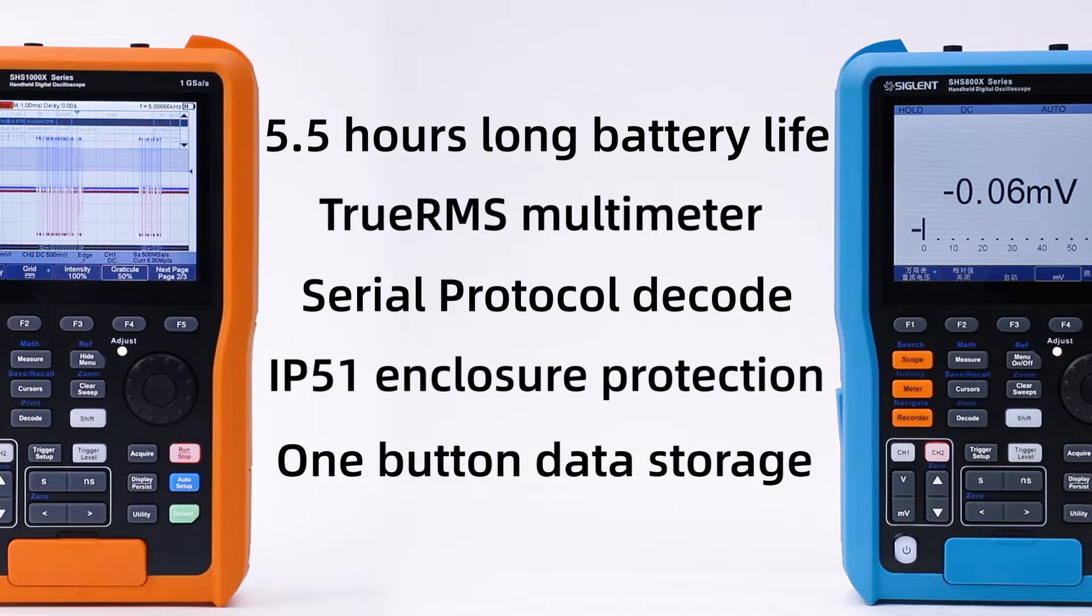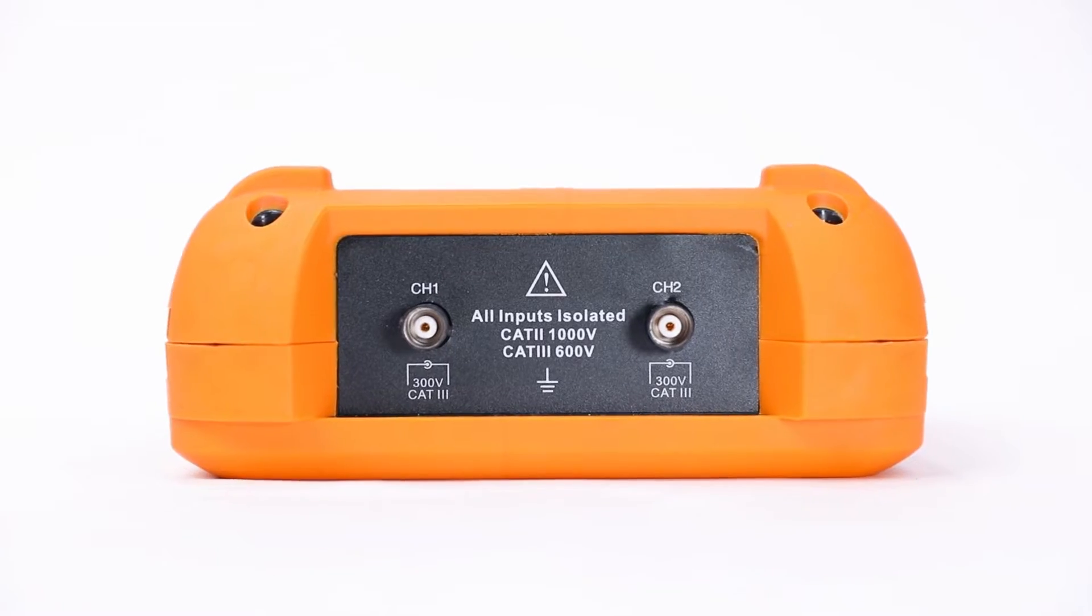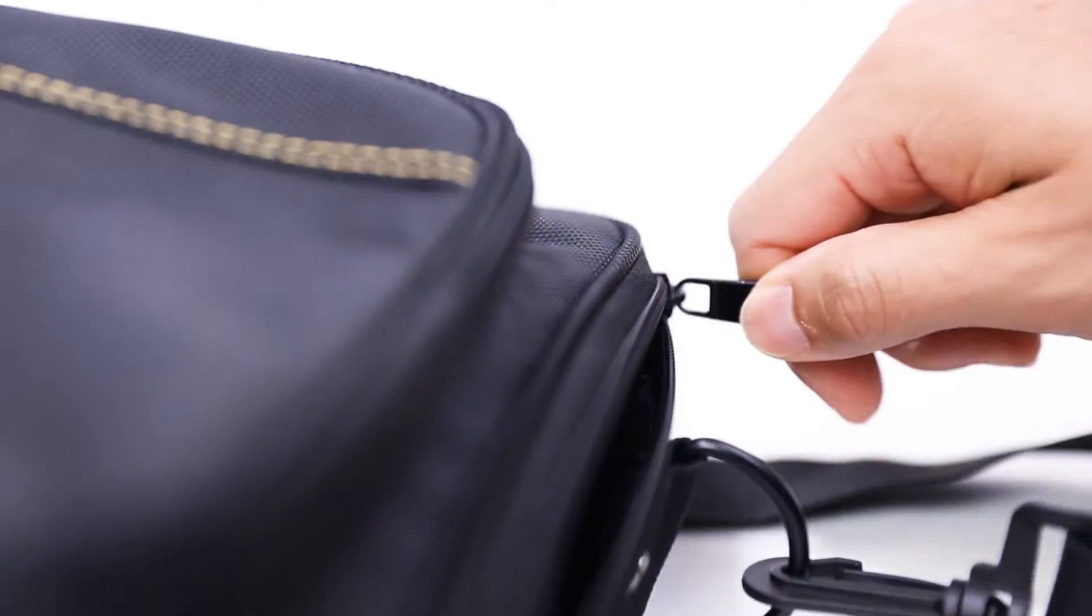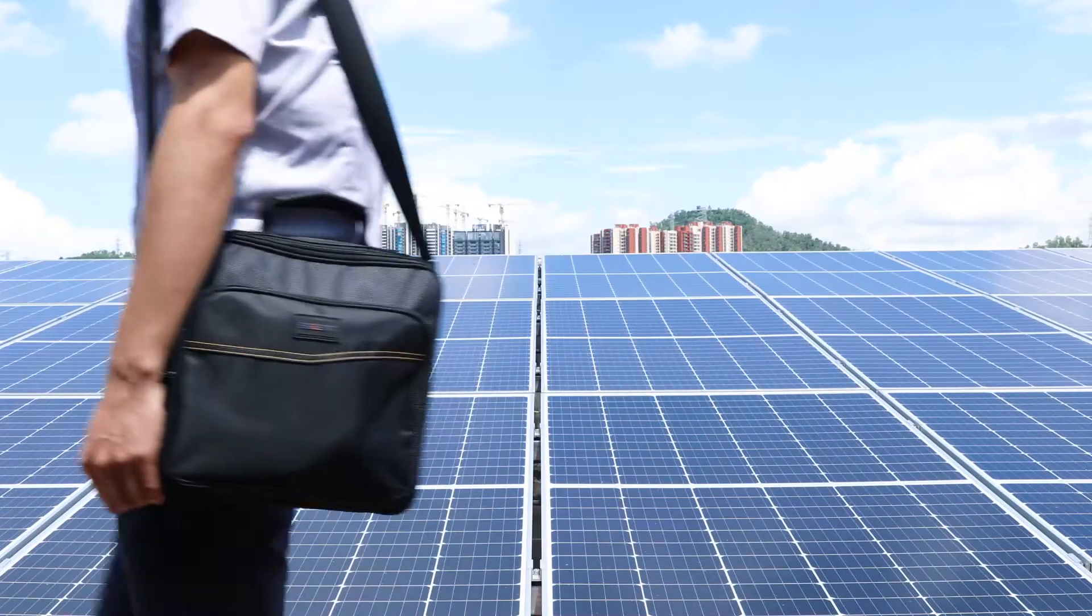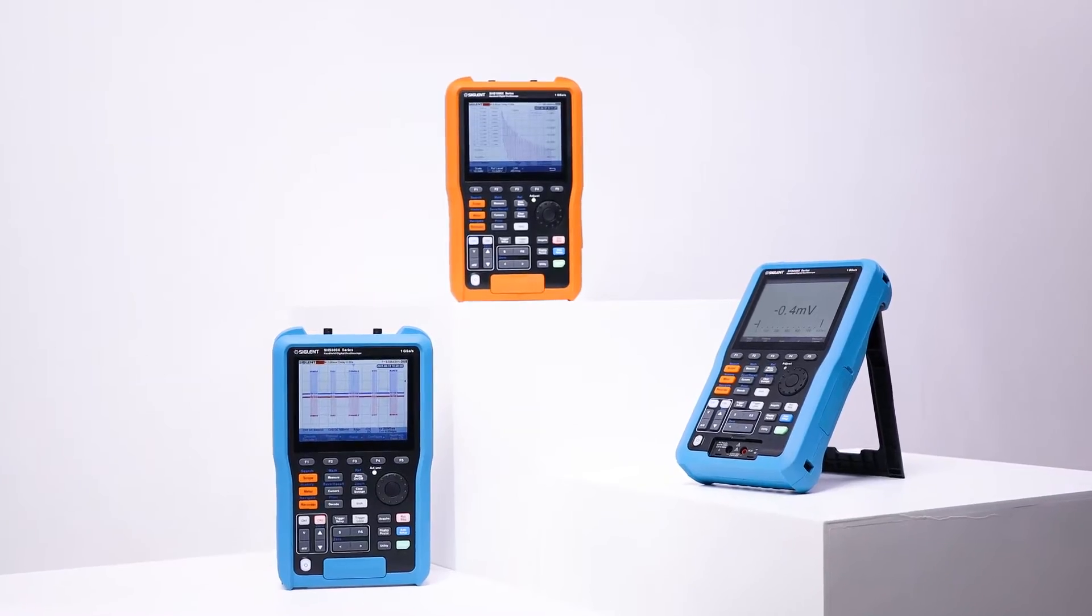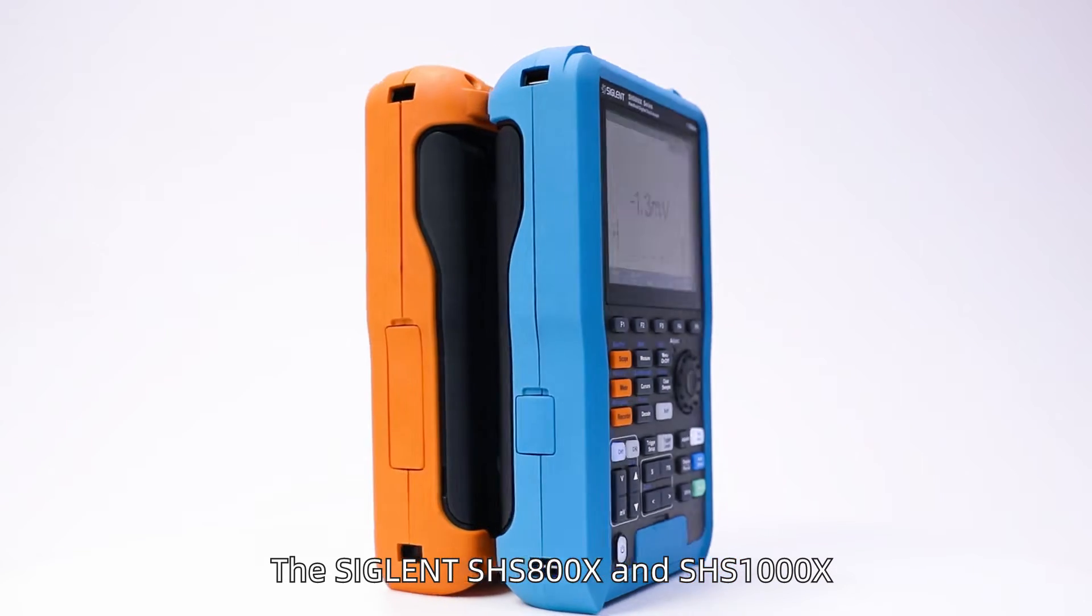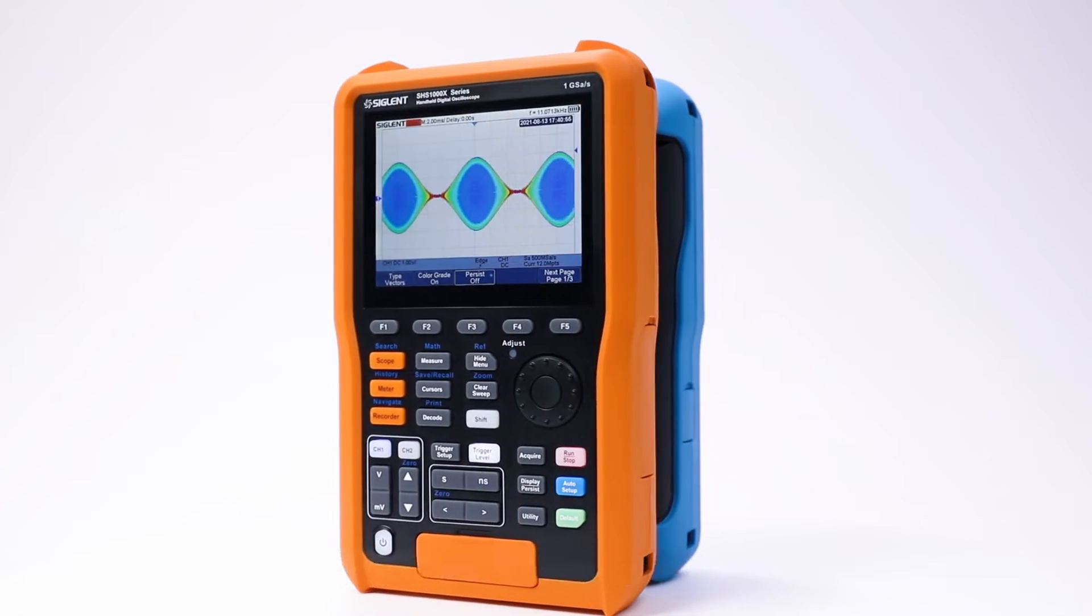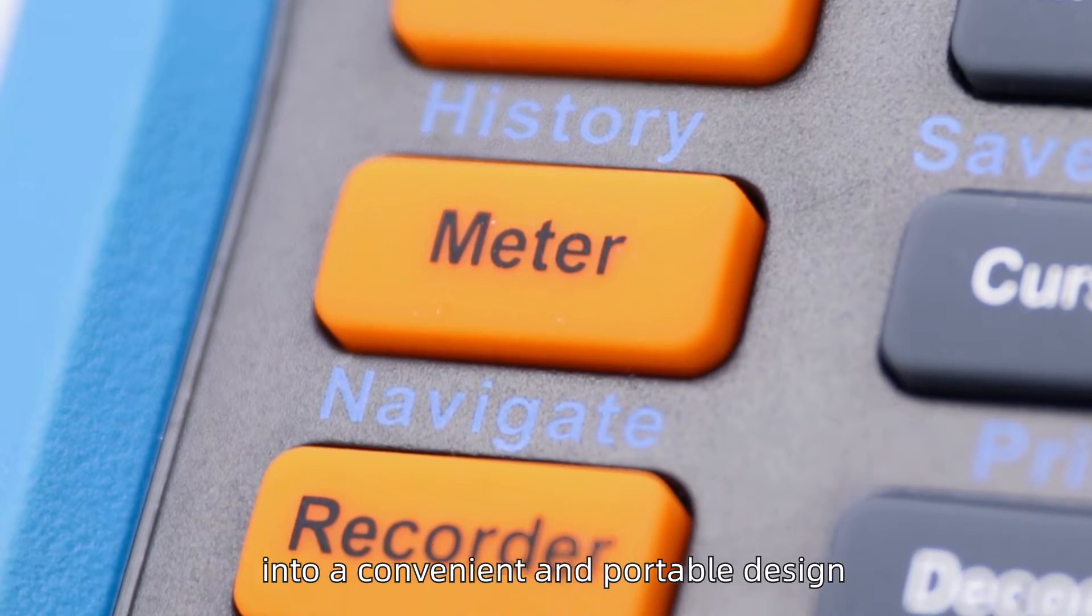Let's get started. The Siglent SHS800X and SHS1000X handheld instruments integrate oscilloscope, recorder, and multimeter functions into a convenient and portable design.